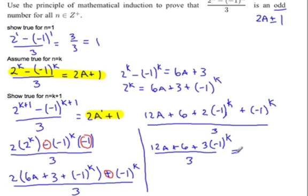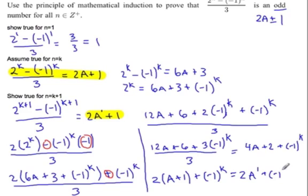So then you can take out a 3 from everything. We end up getting 4a plus 2 plus (-1)^k. We are almost there. Pull out a 2 from just those first two terms: 2(2a+1) plus (-1)^k. 2a plus 1 we'll just call a prime, so 2a' plus (-1)^k.